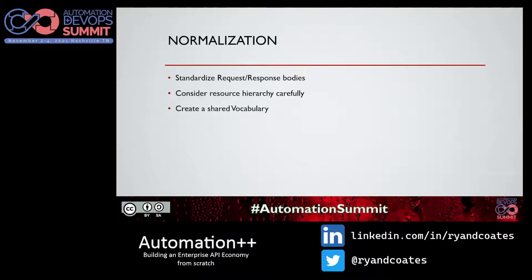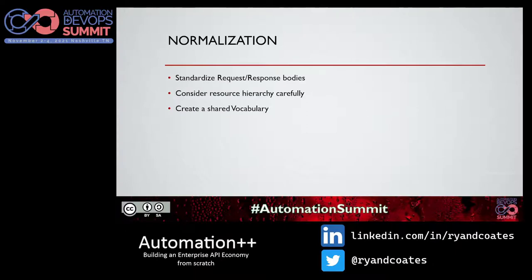When dealing with multiple APIs, especially ones built by different teams at different points in time, they're very likely to have completely different input and output expectations — different request bodies, different property names, different meanings of the same property name. These are the type of things you really want to start normalizing to have an enterprise API economy. This can be done through API standards, guidelines, and style guides. You want standardized request and response bodies, which makes client-side work significantly easier. Good examples include standard error bodies, standard problem messages, and standard request and response metadata that consumers can assume they'll get with every request.